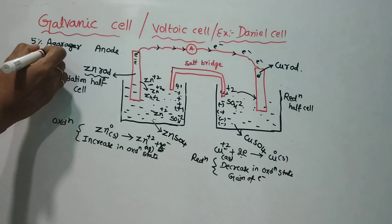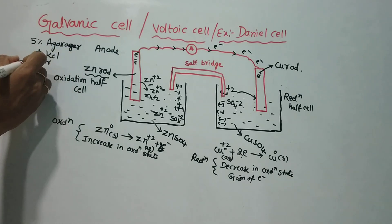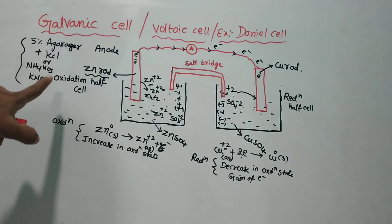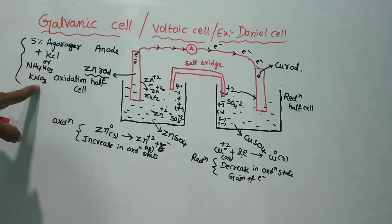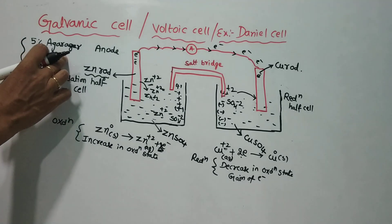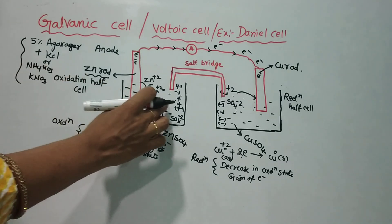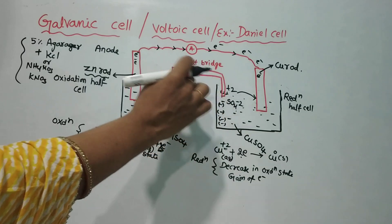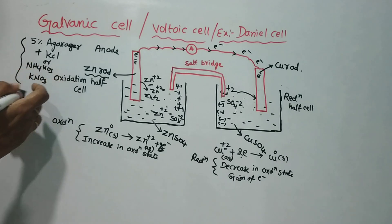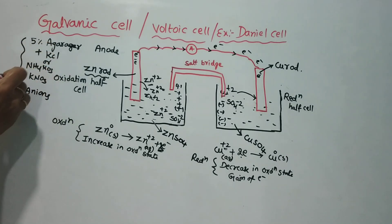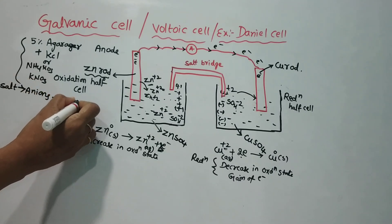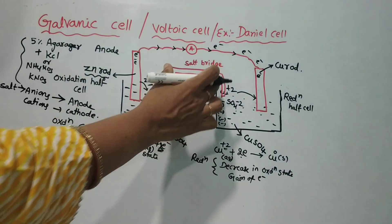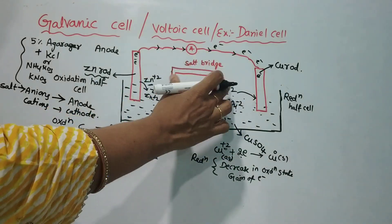Any salt can be used in the salt bridge. For example, KCl, NH₄NO₃, or KNO₃. The positive ions and negative ions of the salt are present in the bridge. The main function of this salt bridge is to maintain the electric neutrality of both half cells.